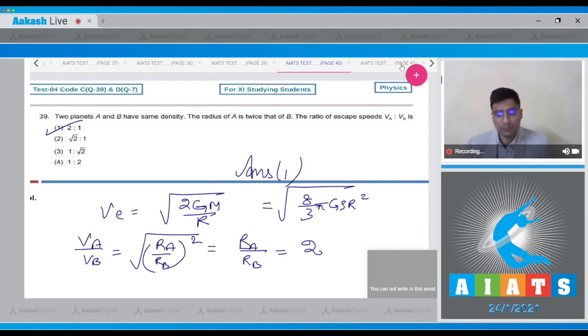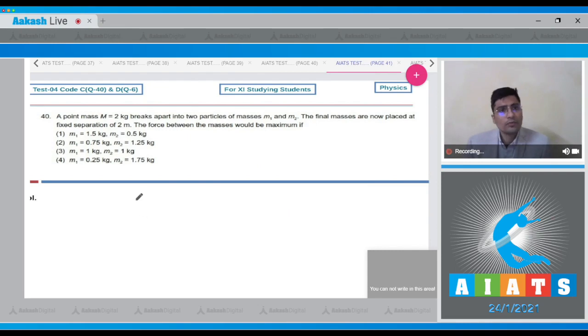Now moving on to question 40. Dear student, the force between two masses in this case is given as g m1 m2 by r square. Here r is a constant. We must remember when the sum of two masses is constant, then the product is maximum when they are equal.